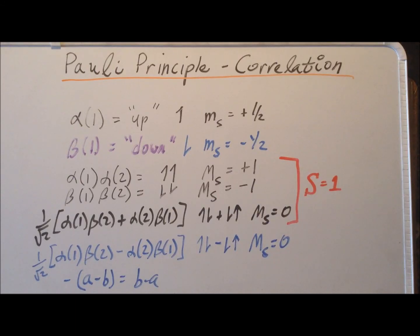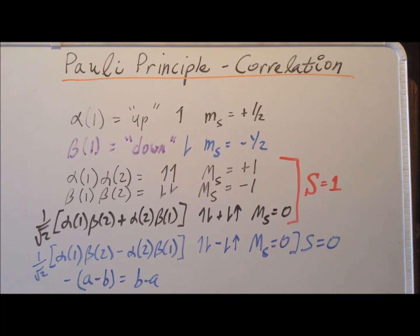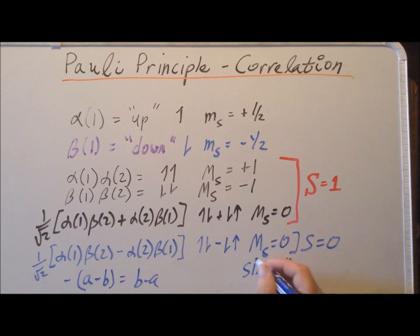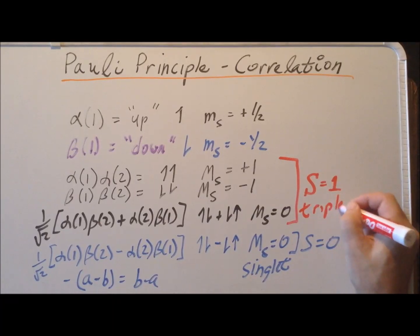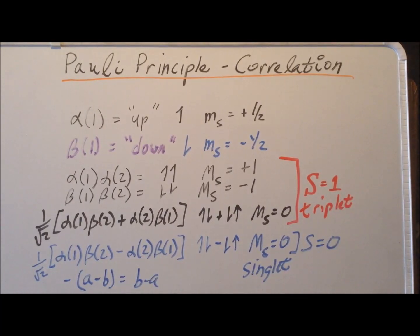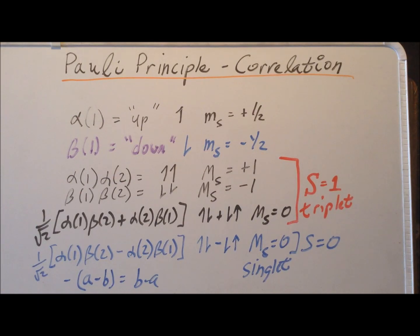Here the overall value of S is equal to zero. So this is the singlet state. In our previous discussion about the Pauli principle for two electrons with the same spin, we were really talking about a triplet state. Now we want to see how we apply the Pauli principle in the case where we have a singlet — where we have opposite spins.